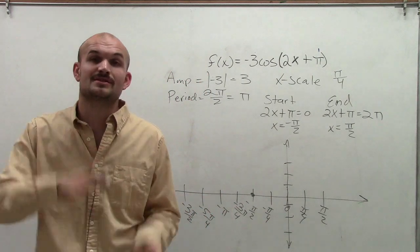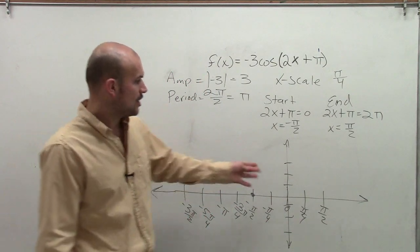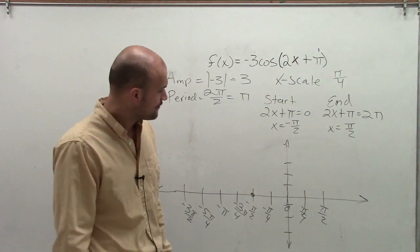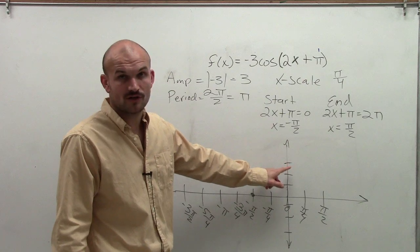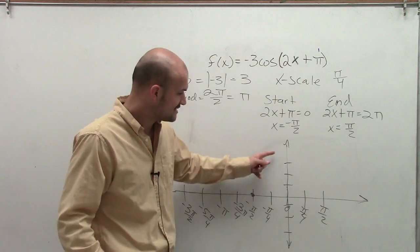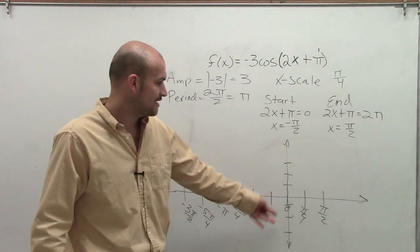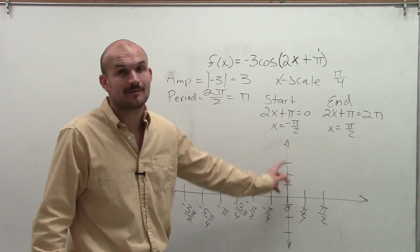Now remember, if we had vertical transformation, that would alter how high we want to go up and down. But remember, the distance from the x-axis to the maximum, with no vertical transformation, is half the distance of the maximum of the graph. So therefore, we can just simply graph our amplitude right there.